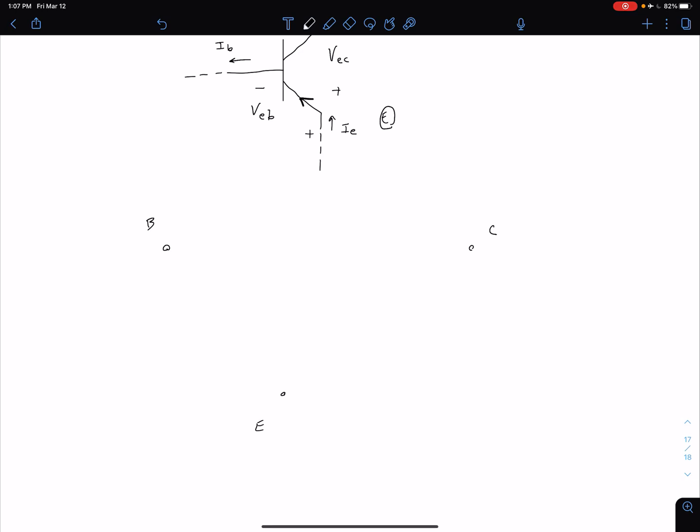So we have emitter, base, and collector. Between our emitter and our base, we still have our resistor Rπ. The big difference is now that we're concerned with this VEB, our polarity is defined at the bottom. And so if we use Vπ, it's going to be defined as positive at the emitter, negative at the base. And of course, we're going to have a base current which is flowing out of the base as shown here.